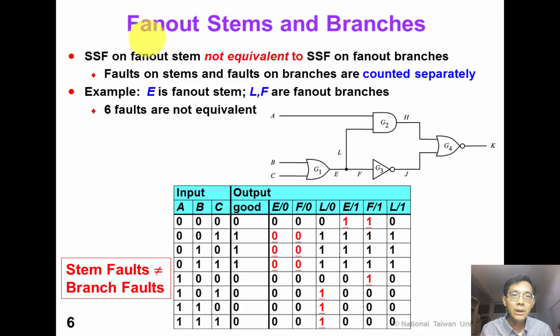In a good circuit, we think that fan-out stem and the fan-out branches are always the same. However, for a faulty circuit, this might not be true. Single stuck-at fault on a fan-out stem is not equivalent to single stuck-at fault on its fan-out branches.